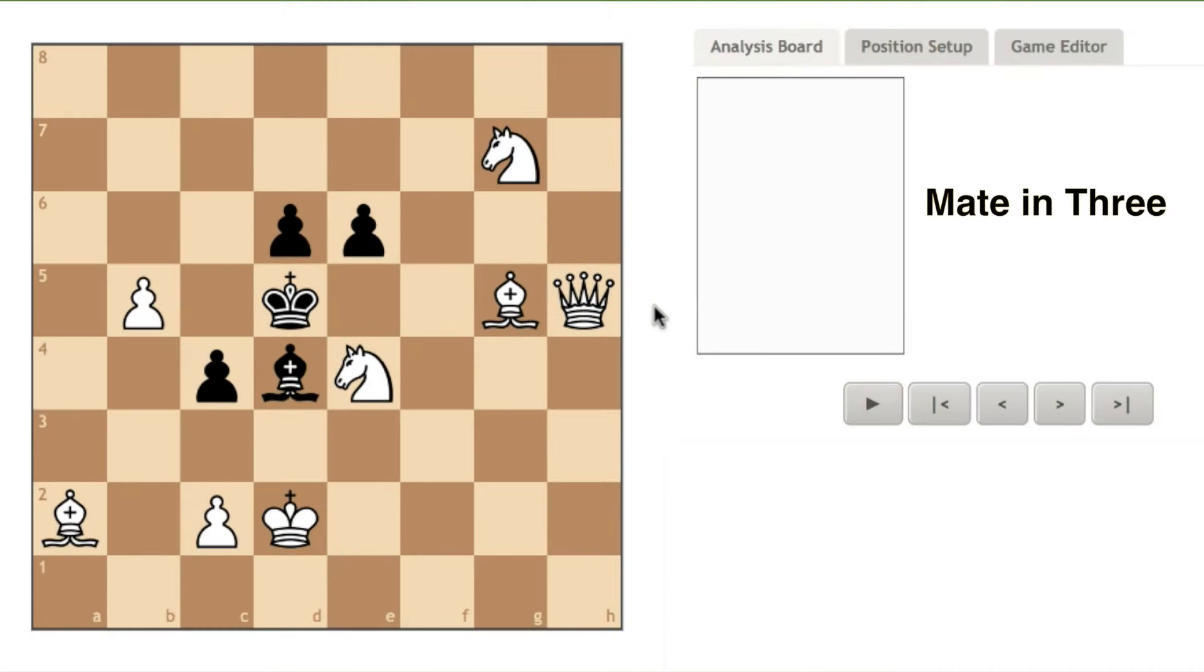There are two solutions to this mate in three problem depending on what black does. White's first move is bishop to king three, which puts the black king in check with the queen.